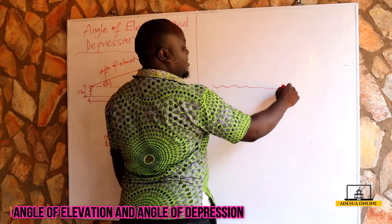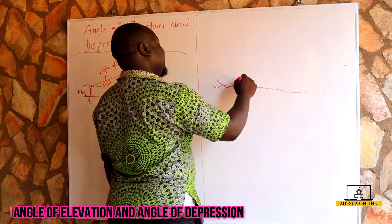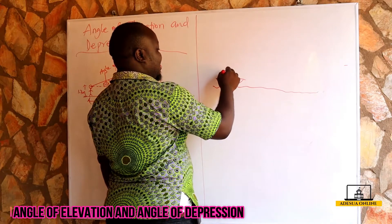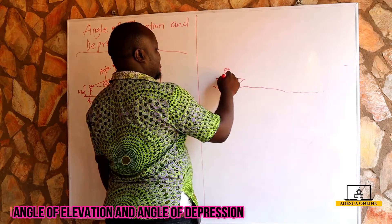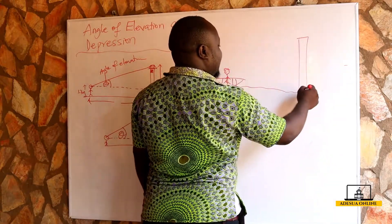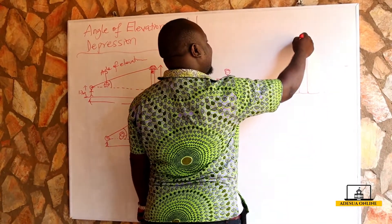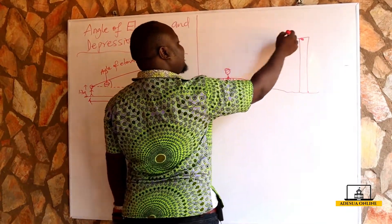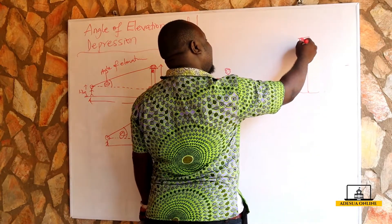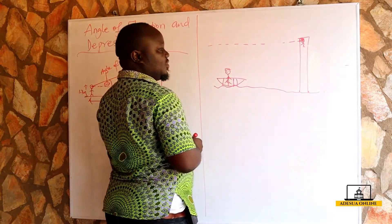Let's assume this is the sea, and there's a canoe here with Amma in it. There's a big, tall tower here. Coffee is at the top of the tower — this is the eye level of Coffee, and the eye level is considered to be a straight horizontal line.